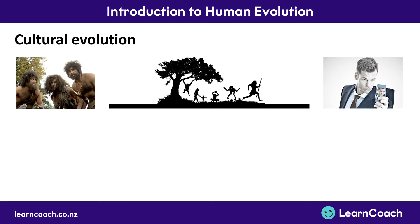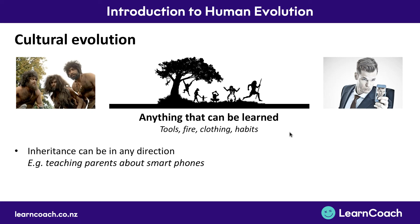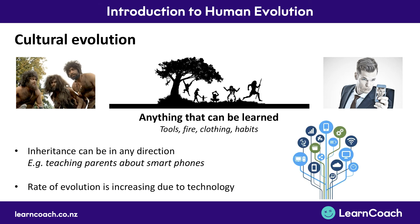The other type of evolution is cultural evolution — we went from the caveman up to who we are now. Anything that can be learned is culture: learning how to make and use tools, how to create and use fire, how to make clothing, different habits. This can happen in any direction — not just from parents to children. For example, kids can teach their parents about new technologies like smartphones. The rate of cultural evolution is also increasing over time due to technology, so we're changing our culture faster than a hundred years ago, which was faster than a thousand years ago, which was faster than a million years ago.